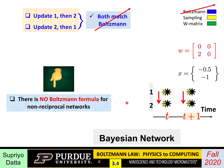The first point about these networks is that there is no Boltzmann formula. The whole Boltzmann approach is that there is an energy function. But if the network is not reciprocal — if the connection is not symmetric — then there is no Boltzmann formula and no energy function.